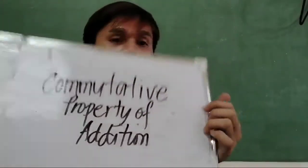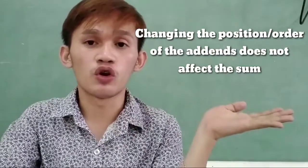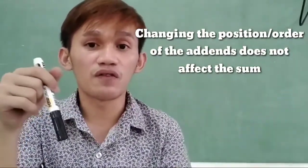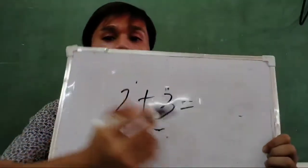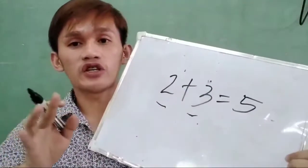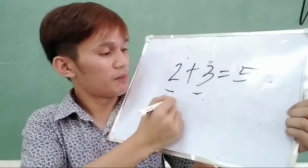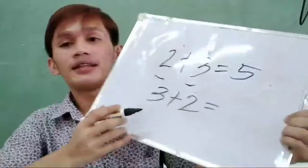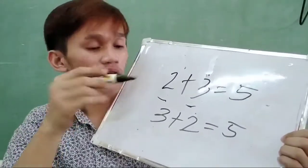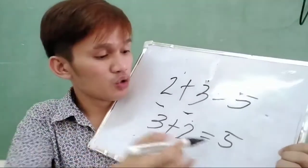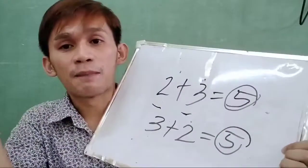So in this property, it states that changing the position or the order of the addends does not affect the sum. So like for example, we have 2 plus 3. These are the addends. So 2 plus 3 is 5. So if we are going to change the position of these two addends, this will be 3 plus 2, and 3 plus 2 is also 5. So whether you change the position of the two addends or not, you will always result in the same sum. So let us now proceed to the third property of addition.